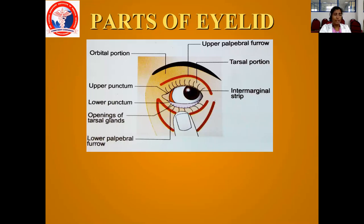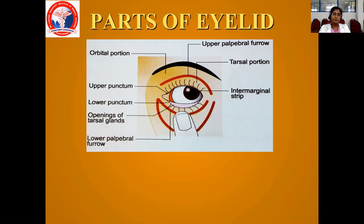Coming to the parts of the eyelid. First is the orbital portion — just below your eyebrows is your orbital portion. Below the eyebrows you have the orbital portion where you have the orbicularis muscle, and below that you have the upper palpebral furrow. A furrow is a depression — a depressed fold. Below the upper palpebral furrow comes your tarsal portion. So you divide it into orbital portion and tarsal portion of the eyelids.